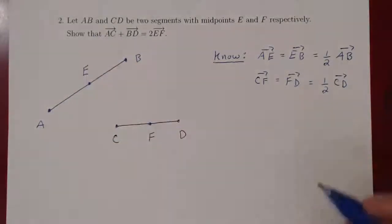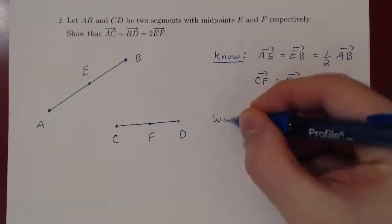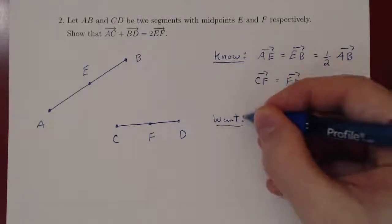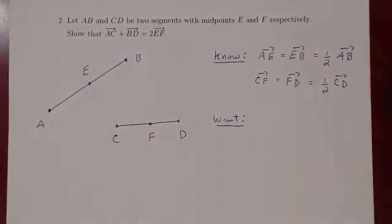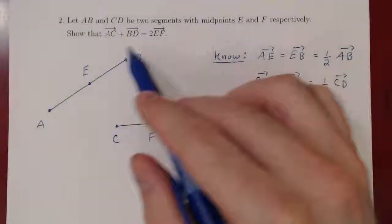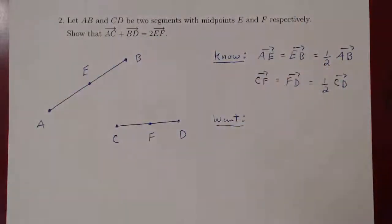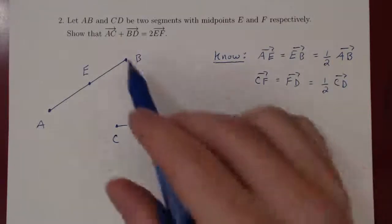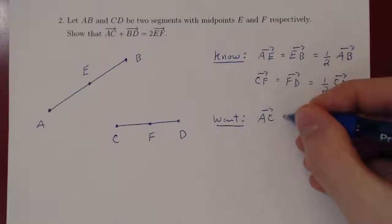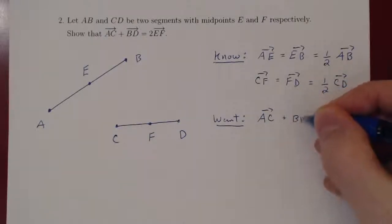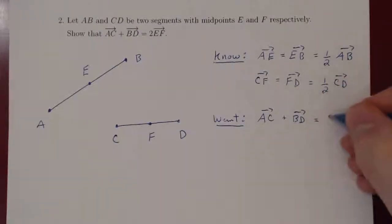And here's what we want to show. So we want to show, and here it's quite simple. We're already given the equality as a vector equality so there's no need to translate. But you'll see some other problems, we will have to translate what we want to show using equalities between vectors. But here we simply want to show that AC plus BD actually is twice of EF.